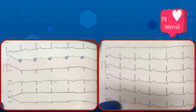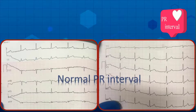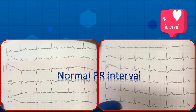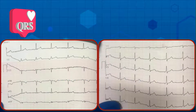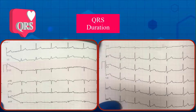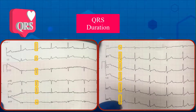Sixth step is the PR interval. Here the PR interval is about three small boxes, therefore it is within normal ranges. Next part is the QRS complexes — as usual, examine four items to determine QRS complex changes. First: QRS duration. Here the QRS is narrow, about two small boxes, so no intraventricular conduction delay is present and the heart conduction system functions normally.